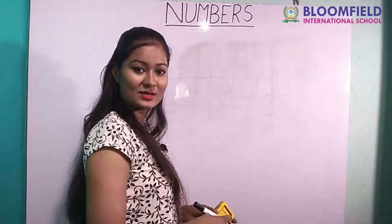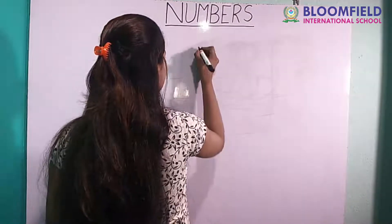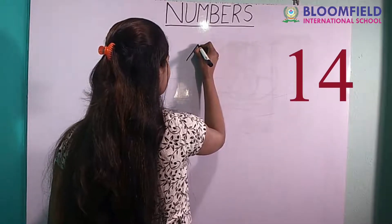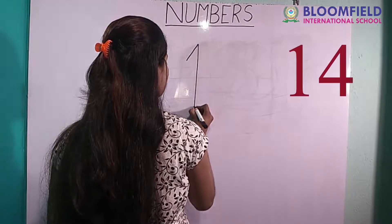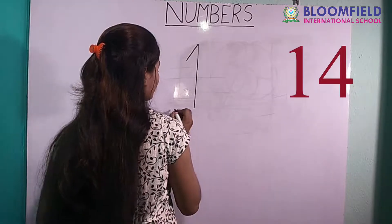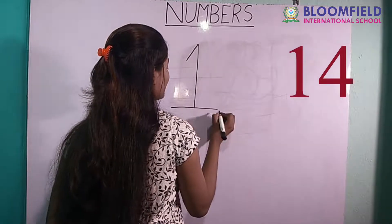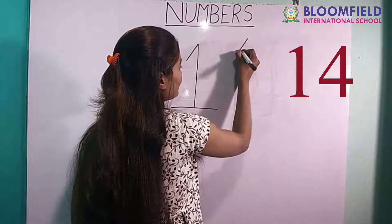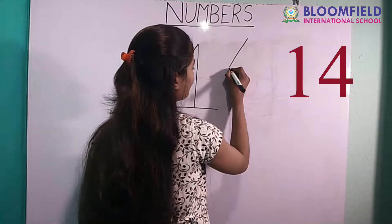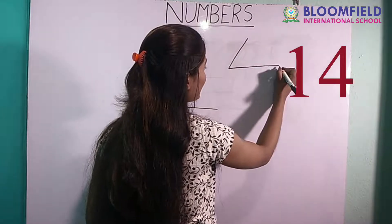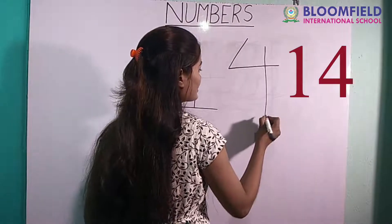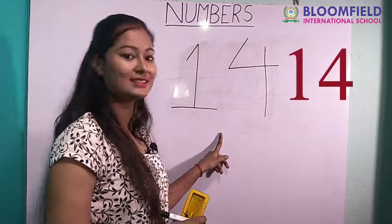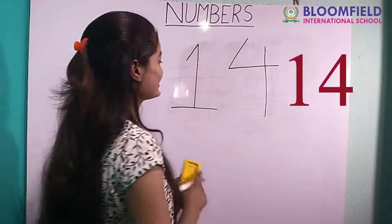Next: slanting line. One, standing line, one sleeping line, slanting line, sleeping line, and one more standing line. One four. Fourteen. Very good.